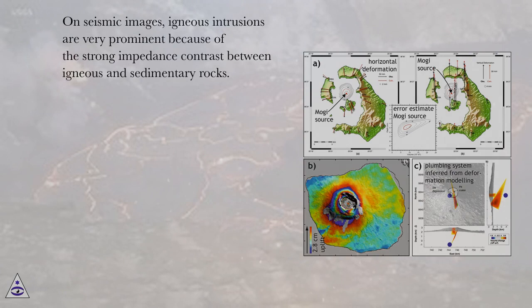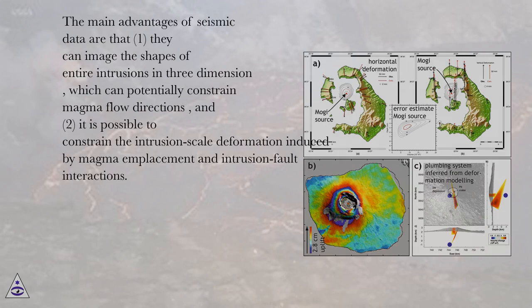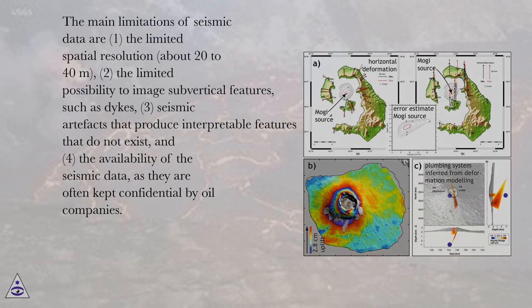The main advantages of seismic data are: (1) they can image the shapes of entire intrusions in three dimensions, which can potentially constrain magma flow directions; and (2) it is possible to constrain the intrusion-scale deformation induced by magma emplacement and intrusion-fault interactions. The main limitations of seismic data are: (1) the limited spatial resolution, about 20 to 40 meters; (2) the limited possibility to image subvertical features, such as dikes; (3) seismic artifacts that produce interpretable features that do not exist; and (4) the availability of the seismic data, as they are often kept confidential by oil companies.